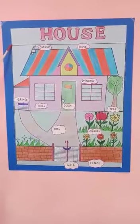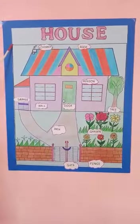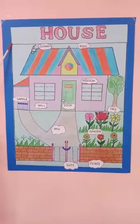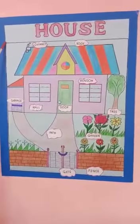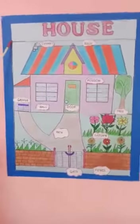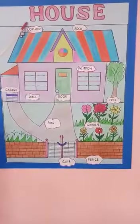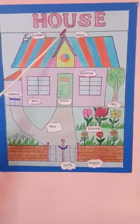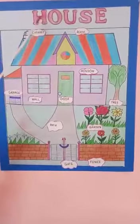Let us learn about the house. Children, have you seen a house? Yes, I have seen a house. I live in my house. This is a house. Let us read the spelling of house. H-O-U-S-E. House.